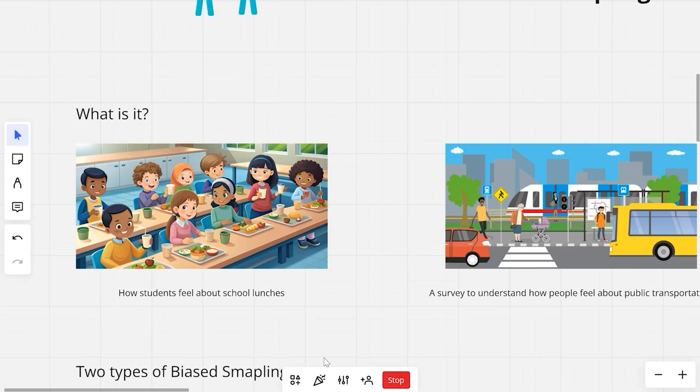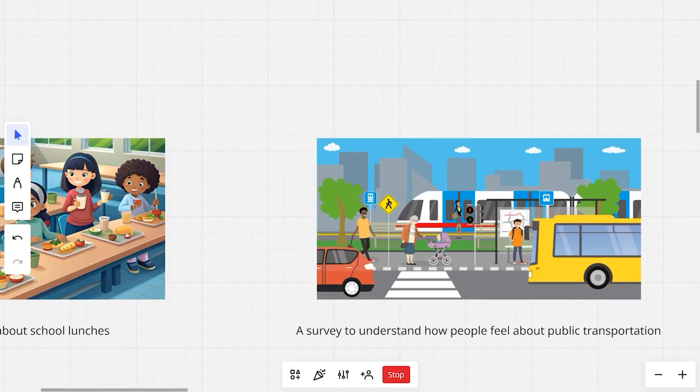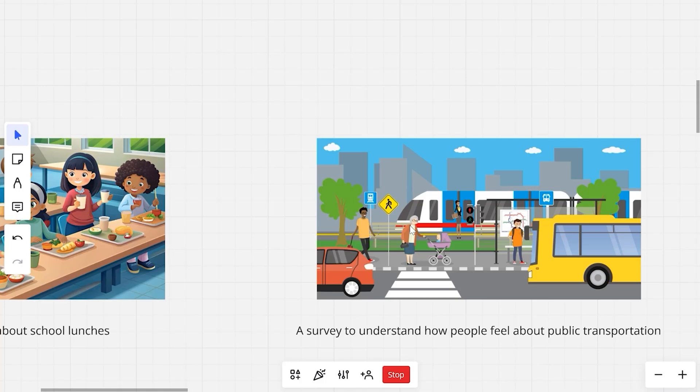Or say for example, you're conducting a survey to understand how people feel about public transportation in your city. Instead of asking people who regularly use buses or trains, you have to make sure to ask a wide range of people like students, office workers, stay at home parents and even people who don't use public transport. But if you ask only a particular group of people, like people who take the bus every day, your result or your survey, your sample would be biased.